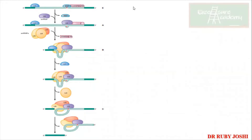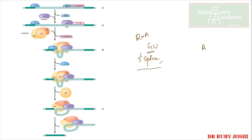What we discussed yesterday was that in order to carry out RNA splicing, we mentioned the 5' splice site and the branch site. GU is the sequence present at the 5' splice site, A is present at the branch site, and AG is present at the 3' splice site.